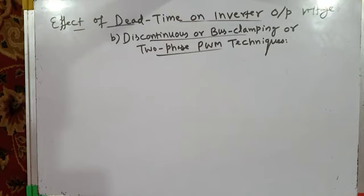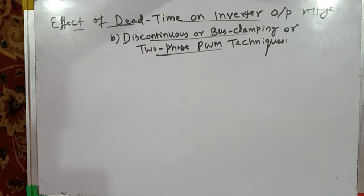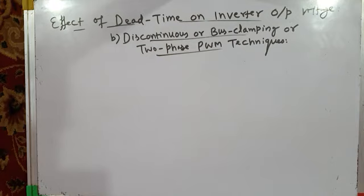This square wave has a fundamental component which gets added to the main fundamental component of the inverter output voltage, and it has lower order harmonics like 5th, 7th, 11th, 13th which get introduced in the inverter output voltage. In the line voltages and phase voltages, all common mode signals cancel, but the low frequency distortions due to the average error pole voltage do not cancel because it is not a common mode signal. Therefore, your inverter output voltage — whether line voltage or phase voltage — will have some sort of low frequency distortion.